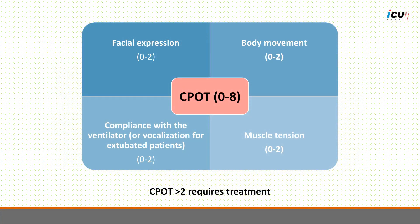The CPOT is used in patients who are intubated and cannot report pain. It includes assessment of facial expression, body movements, compliance with the ventilator — which is replaced with vocalization for extubated patients — and muscle tension. This scoring system is on a scale from 0 to 8, with scores greater than 2 signifying an unacceptable level of pain that requires treatment.